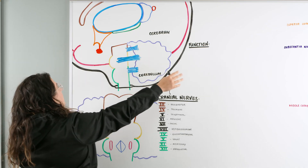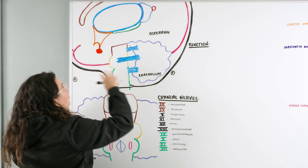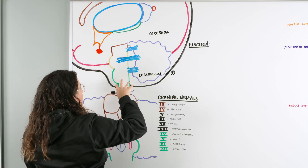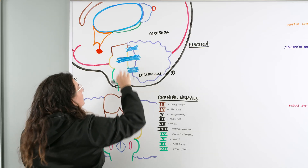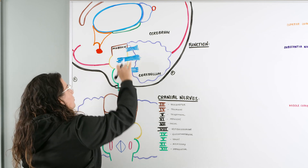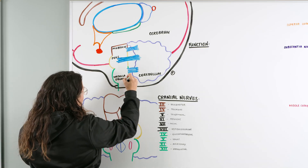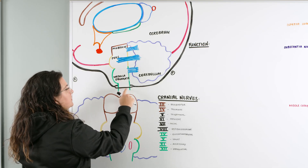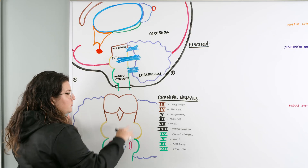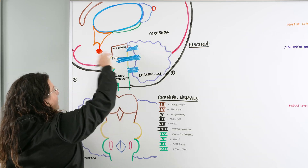Looking at this lateral left diagram with anterior here and posterior here, we have the skull going all the way around. Our cerebrum is superior to our brainstem, and our brainstem is anterior to our cerebellum. The brown portion is the midbrain, the yellow portion is the pons, and the green portion at the bottom is our medulla oblongata. There's an opening called the foramen magnum where the brainstem exits the skull and becomes the spinal cord.